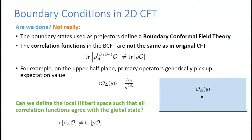One can see that this one-point function vanishes with some power of y, the separation from the boundary. So as I take all correlation functions far from the boundary, there's a factorization where they agree with the global correlator. But I'm interested in understanding the exact Hilbert space structure: I want a Hilbert space that gives precisely the same correlation functions, not just approximately in some limit.